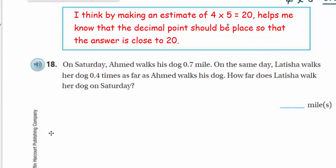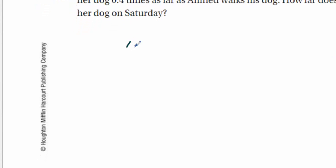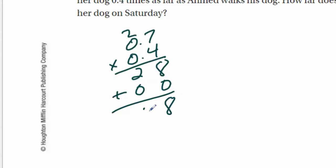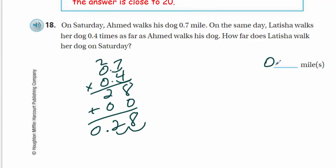On Saturday, Ahmed walks his dog 7 tenths of a mile. On the same day, Leticia walks her dog 4 tenths times as far as Ahmed walks his dog. How far does Leticia walk her dog on Saturday? We can multiply these straight across. We're going to end up with 28, carry the 2. And now we just add. We get 28. Here we have 2 powers of 10, 2 decimal places. So we need to move 2 decimal places over. Always good to put that 0 in front. So we end up with 0.28 miles.